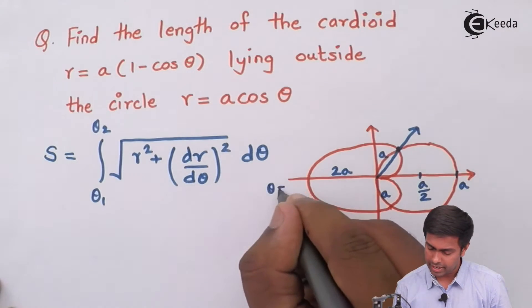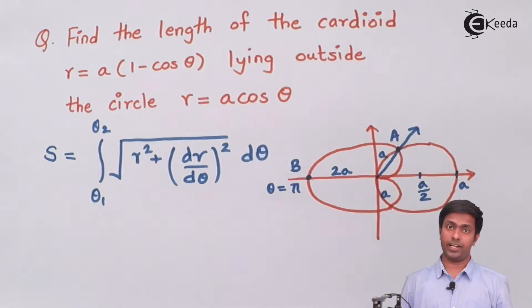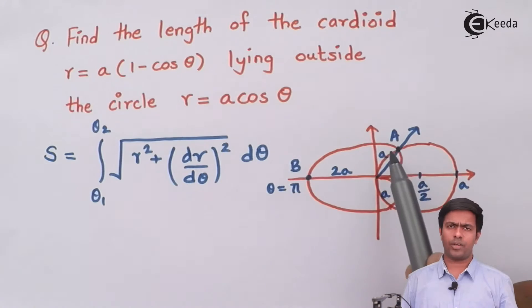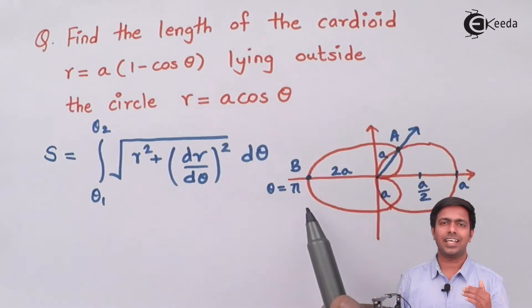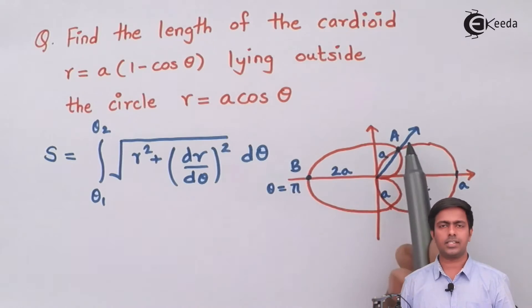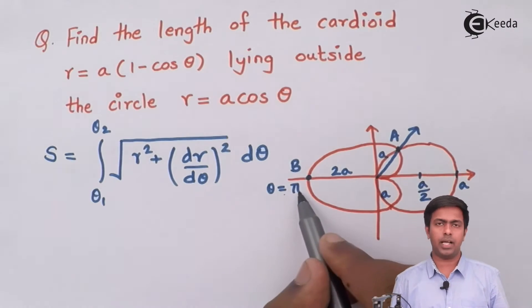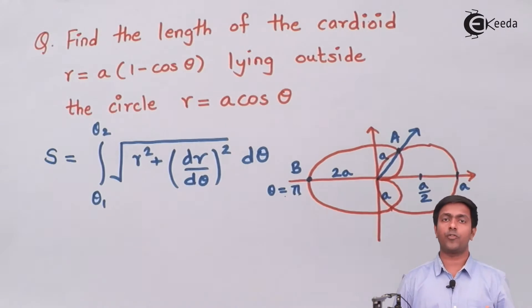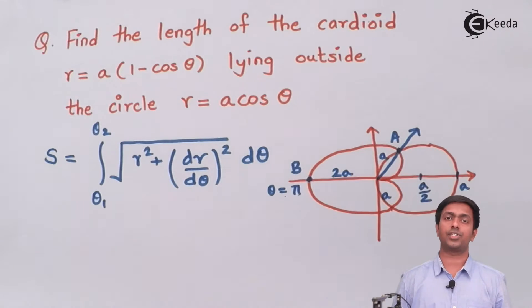Here I'll get the value of theta as phi. Let's say this is point B and this is point A. I'll find out the length of curve from A to B, i.e., arc AB. Whatever length I'm getting, I'll just multiply it by 2, because the region lying below the x-axis is exactly symmetric to this arc AB. So whatever is the value of this, I'll double it to get the length of the complete curve. At point B, I know theta is pi, so my upper limit will become pi. But at point A, I don't know the value of theta, so let's find it out.